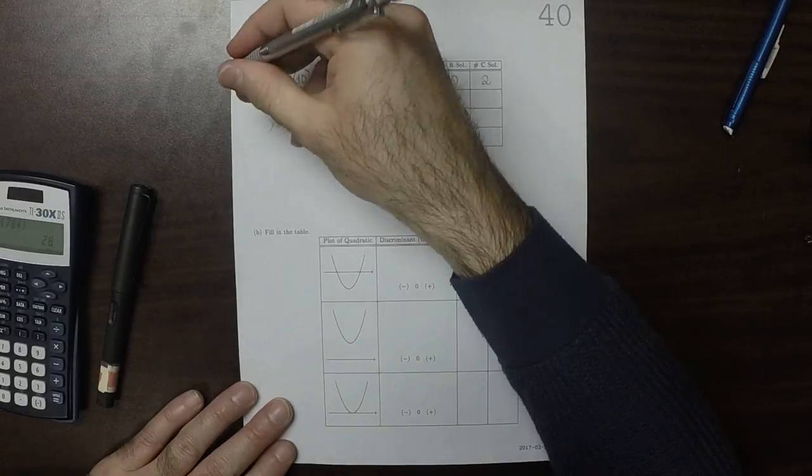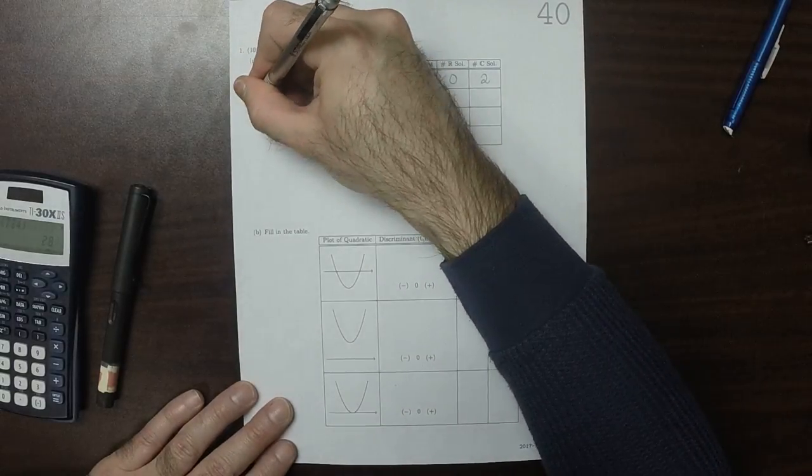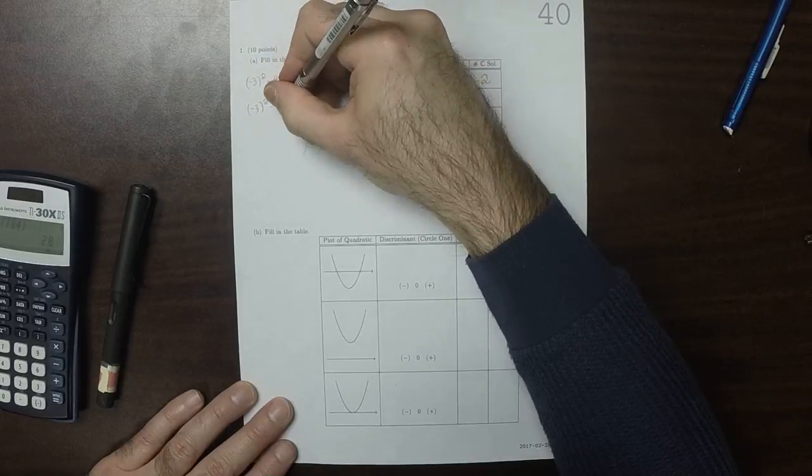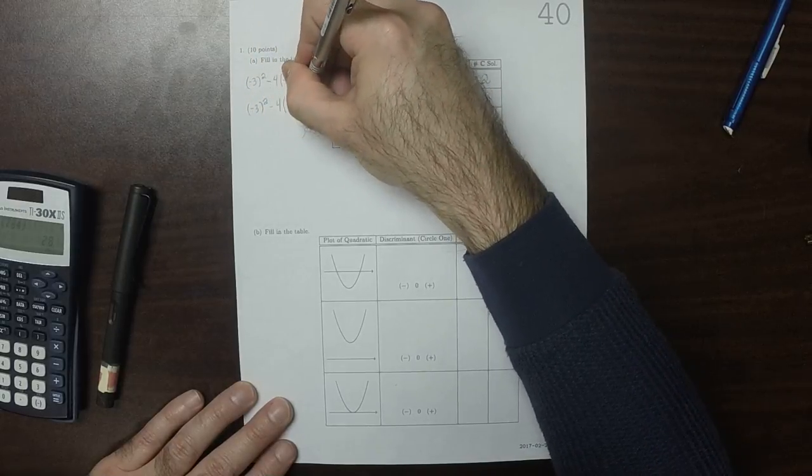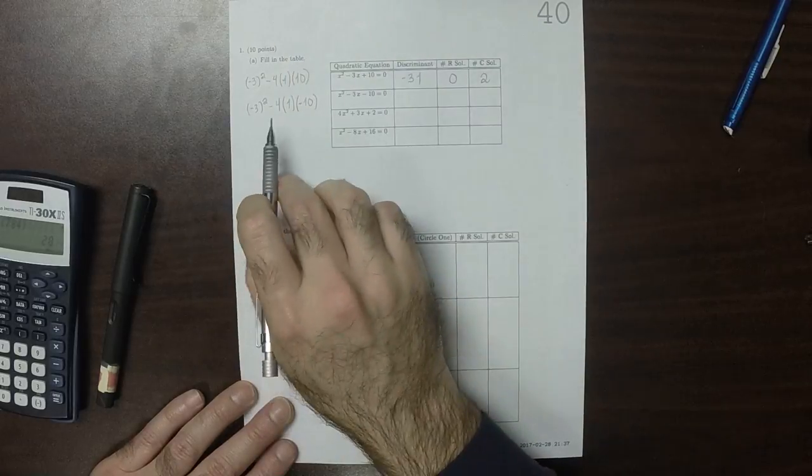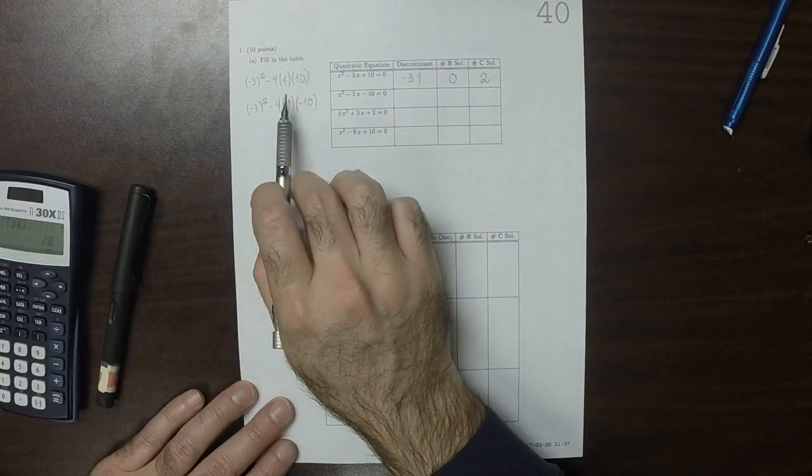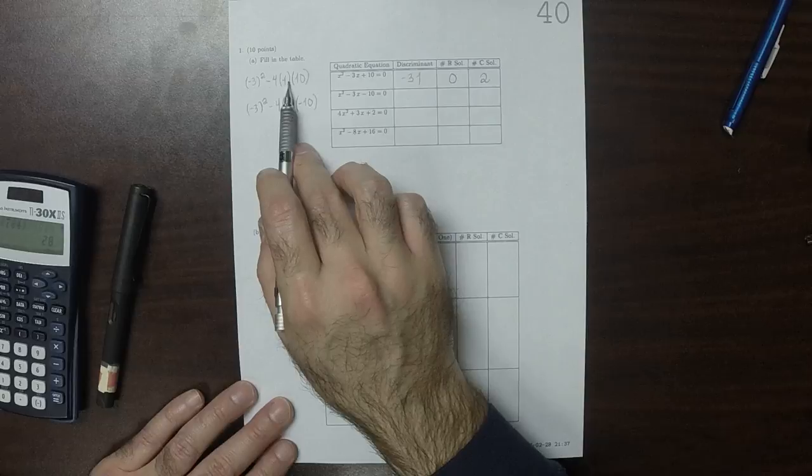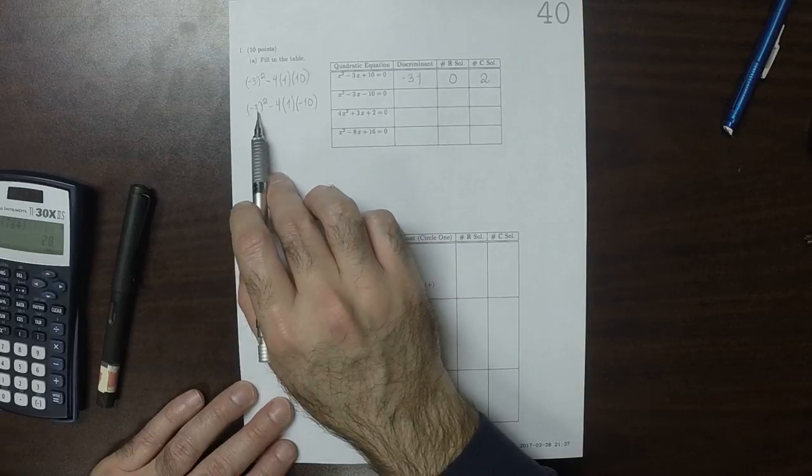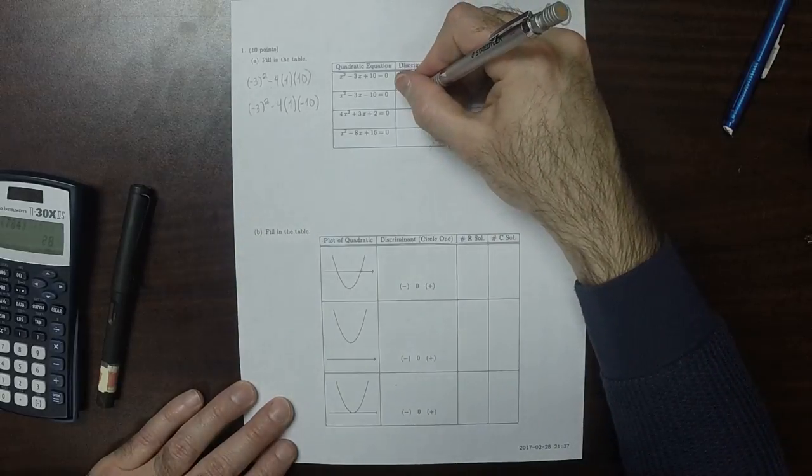For the next one, that would be negative 3 squared minus 4 times 1 times negative 10. So now instead of subtracting 40, we're going to add 40. So 9 plus 40, that would be 49.